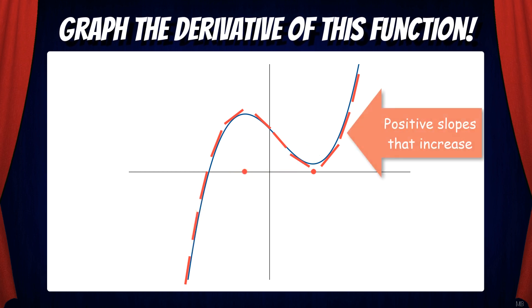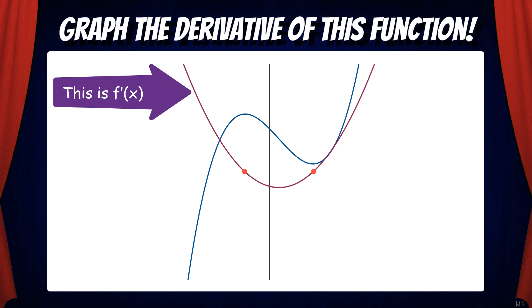Then it increases and comes back to zero to reach the local minimum of the function. Then after passing the local minimum, we can see that we have positive slopes that are increasing. Now we can put all the pieces together to draw a sketch of the derivative function. And here it is.